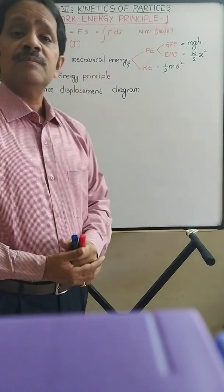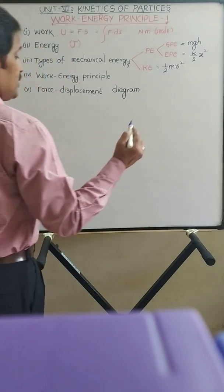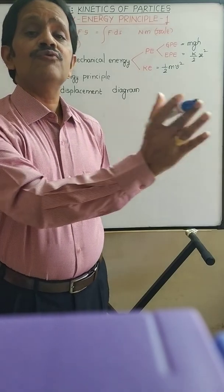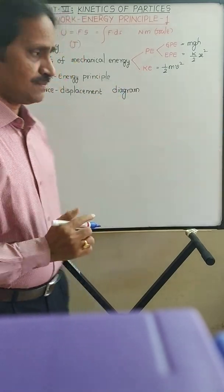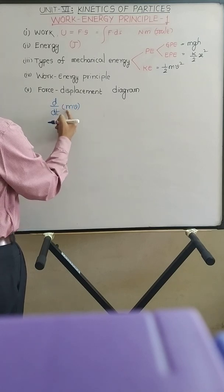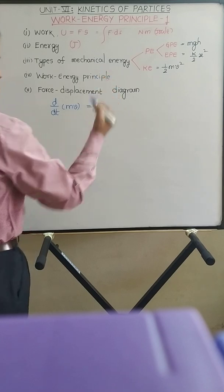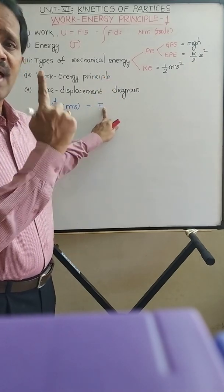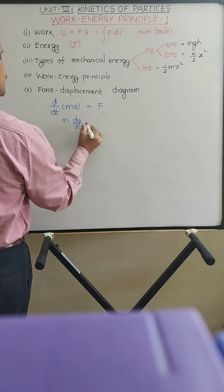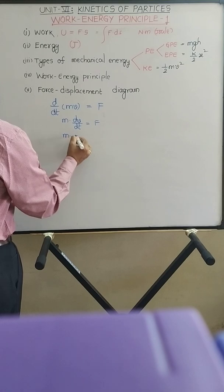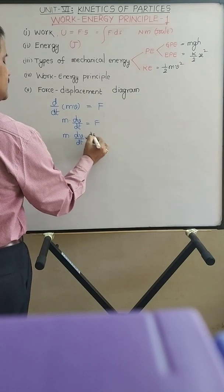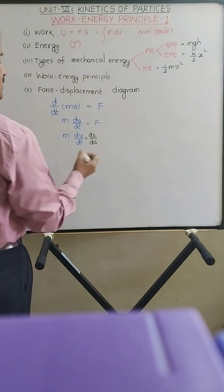Now we will see what is the work-energy principle. As per Newton's second law of motion, the rate of change of momentum is equal to the resultant or unbalanced force. So d/dt of MV equals F, and since mass is constant, it is M·(dV/dt) = F. Multiplying and dividing by dS, we get M·(dV/dt)·(dS/dS) = F.